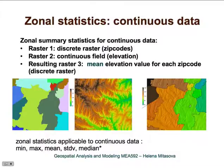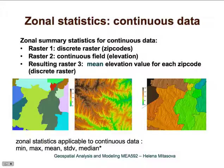We can apply other statistical measures as well — minimum, maximum, standard deviation, median — any number of statistics for each zip code or, for example, for each watershed.